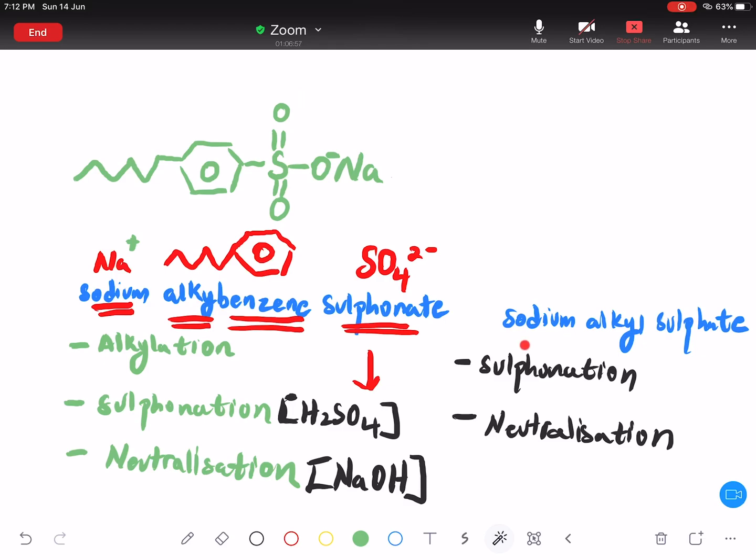Untuk yang ni, guys, lebih kurang sama je. You ada Na plus, eko, ada tak benzene? Ada tak benzene? Tak. Dan sulfonate adalah SO4 2 minus, sulfuric acid. Maksudnya, dia punya cerita pula ada eko. Eko dia terus sambung dengan sulfur.